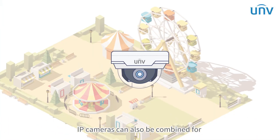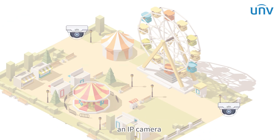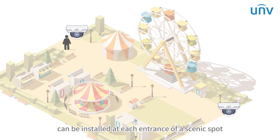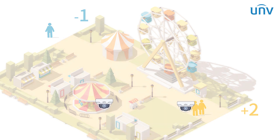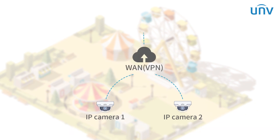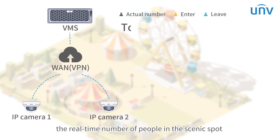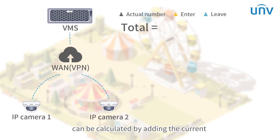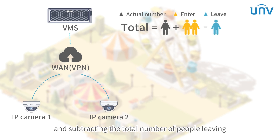IP cameras can also be combined for people counting management. For example, an IP camera can be installed at each entrance of a scenic spot, recording the number of people entering and leaving each exit. IP cameras are connected to VMS through LAN or WAN, transmitting the recorded data to VMS for unified analysis and management. The real-time number of people in the scenic spot can be calculated by adding the current total number of people to the total number of people entering and subtracting the total number of people leaving.